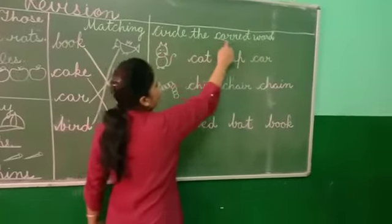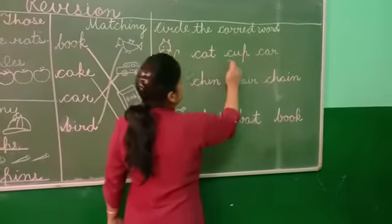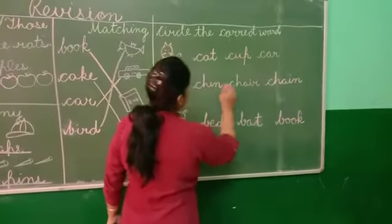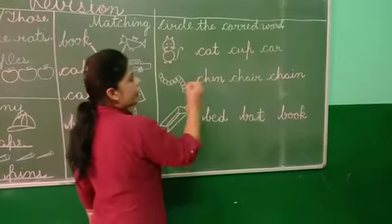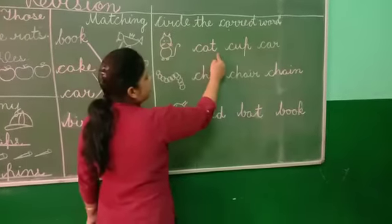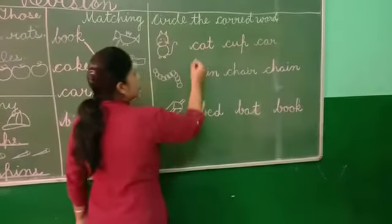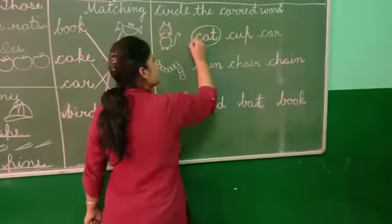Search the correct word. Here are pictures. Here are three sentence words. So you search the correct word. Cat. Book. Cat. Book. The correct word is cat.